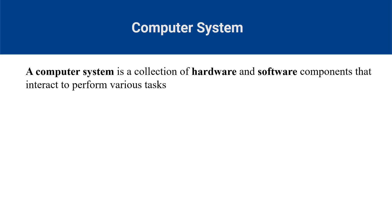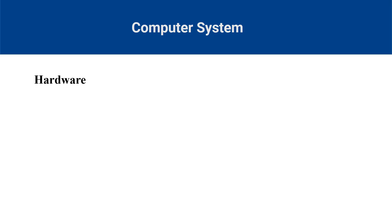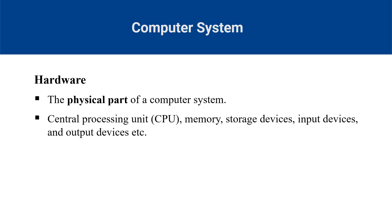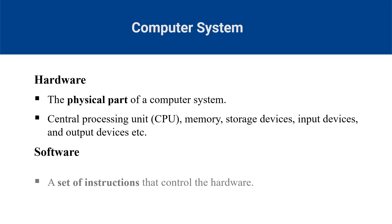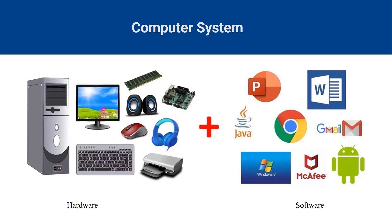A computer system is a collection of hardware and software components that interact to perform various tasks. Hardware refers to the physical part of a computer system, such as the central processing unit, memory, storage devices, input devices and output devices. Software refers to the instructions that control the hardware, such as the operating system, applications and drivers. Hardware and software are interdependent parts of a computer system. Hardware needs software to function properly, and software needs hardware to execute commands. Without hardware, software would have no platform to run on. Without software, hardware is just a collection of useless plastic and metallic parts.